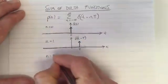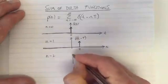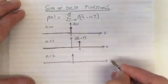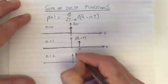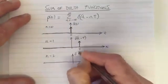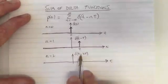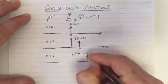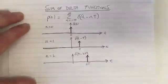What about n equals 2? That's another element in this summation. We plot that one here. That's delta of t minus 2T. That's the delta shifted to the place where little t equals 2 times capital T. This is 2T.